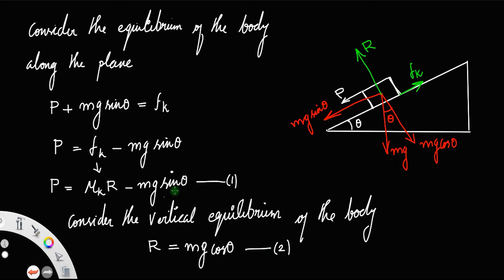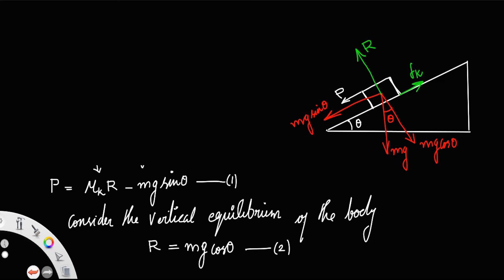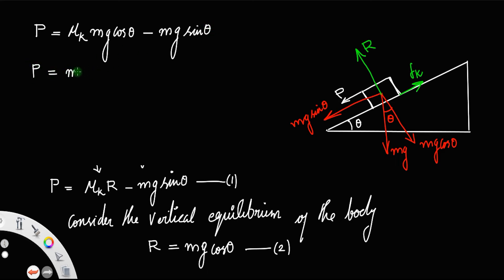We can substitute equation two into equation one. Equation one becomes P equals mu k times R, which can be substituted as mg cos theta, so P equals mu k mg cos theta minus mg sin theta. Taking mg out, P equals mg times (mu k cos theta minus sin theta). This is the net force acting on the body in order to move it down the inclined plane.